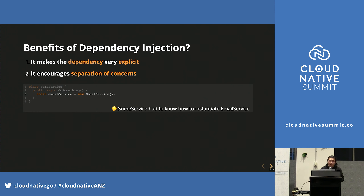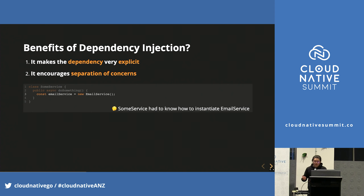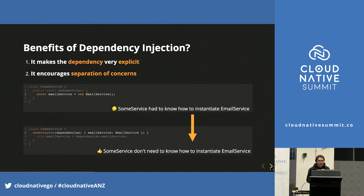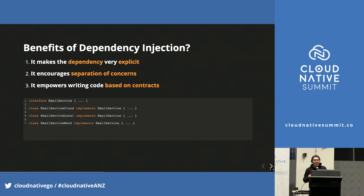Second, it encourages separation of concerns. Before using dependency injection, SomeService had to know how to instantiate EmailService — for example, should we directly new it, do we need extra parameters, should it be a singleton, etc. This leaks the process and responsibility of creating and maintaining EmailService instances. After using dependency injection, that process is abstracted out. Furthermore, DI allows us to write code based on contracts rather than concrete classes — EmailService can be an interface, and we can have different classes implementing it for different scenarios: EmailServiceCloud for real emails on cloud, EmailServiceLocal to log actions locally, and EmailServiceMock to skip sending entirely in unit tests.